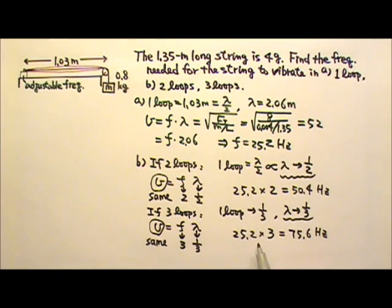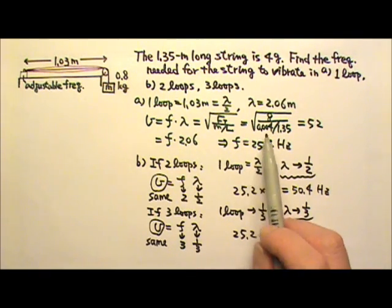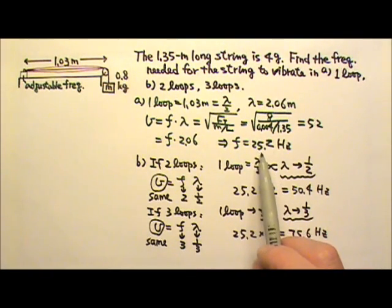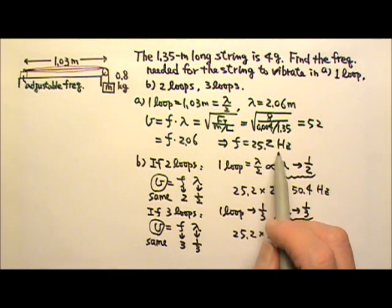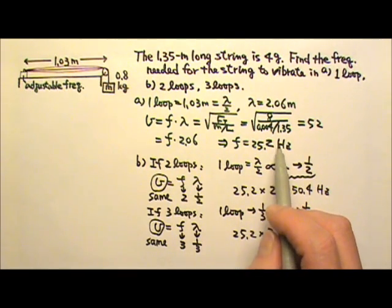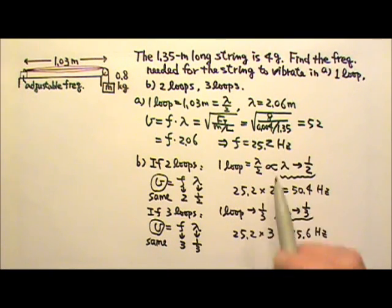This means if we want four loops, it will be 25.2 times 4; five loops will be 25.2 times 5; six loops times 6; seven loops times 7, and so on and so forth.